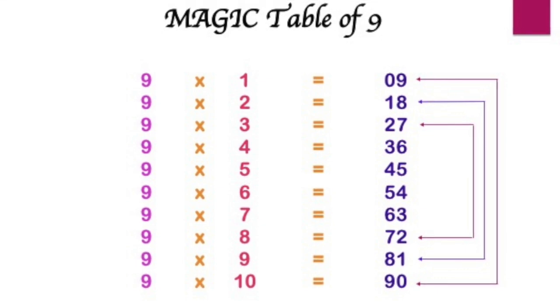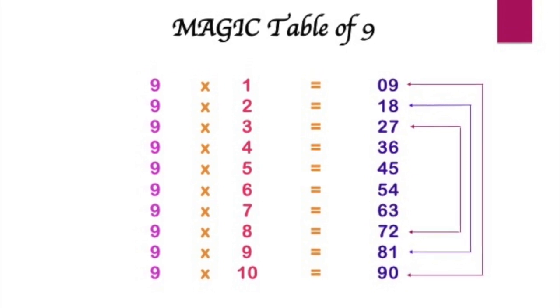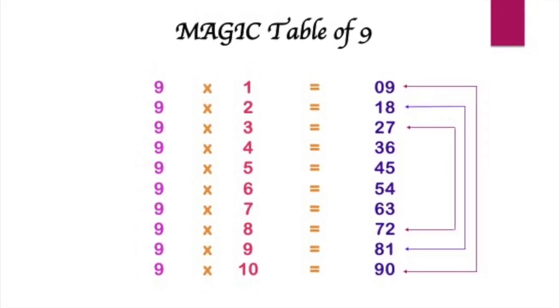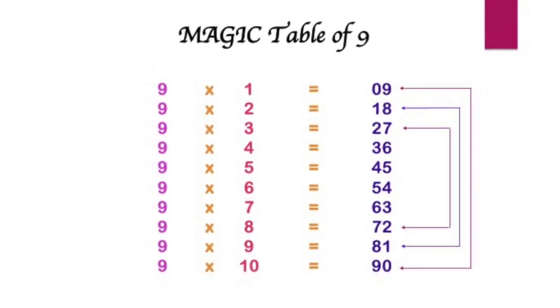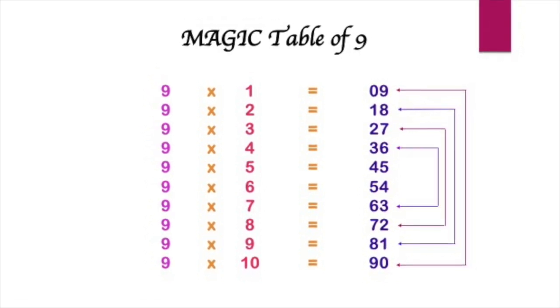This phenomenon can be seen further like this. Here 9 multiplied by 3, which is equal to 27, that is 2 and 7. And 9 multiplied by 8, that is 72, 7 and 2. Moving further,